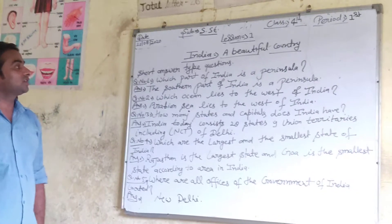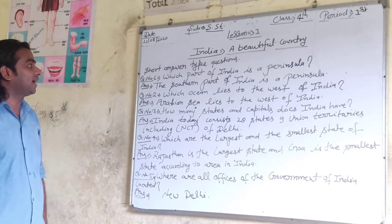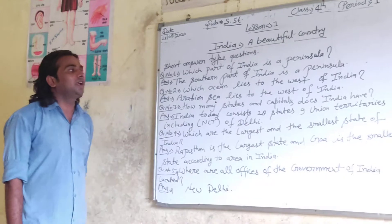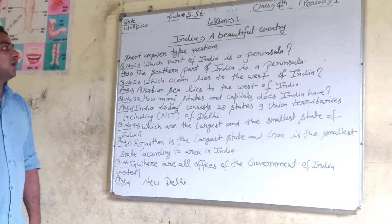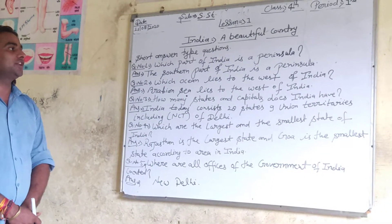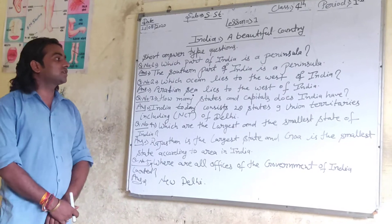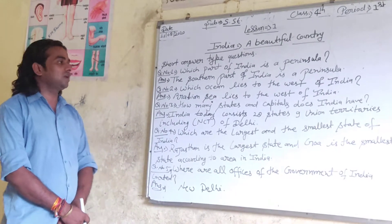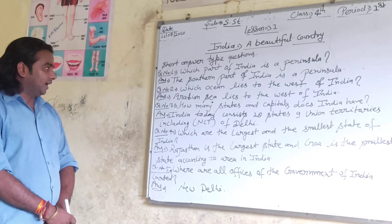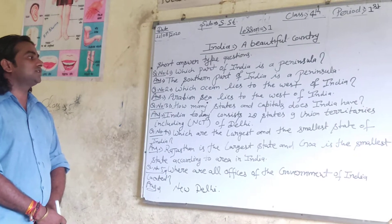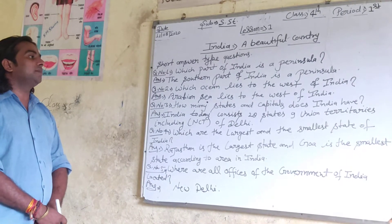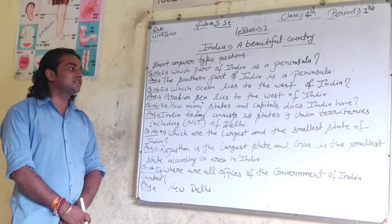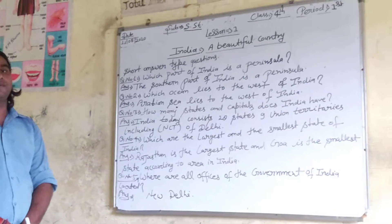We have a short answer type question. First question: which part of India is a peninsula? The answer is the southern part of India is a peninsula. Second question: which ocean lies to the west of India? The answer is the Arabian Sea lies to the west of India.